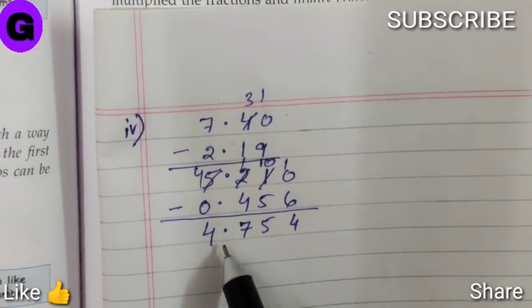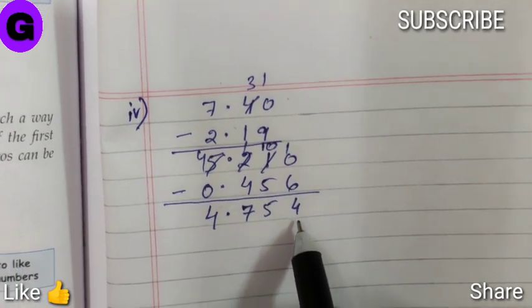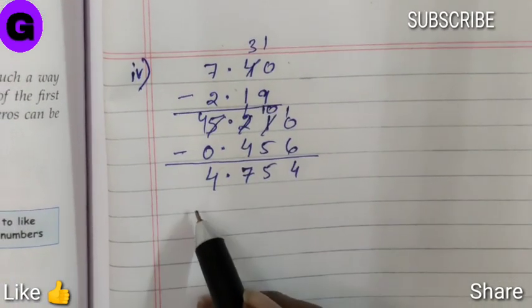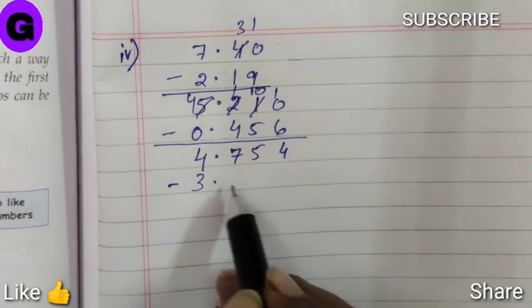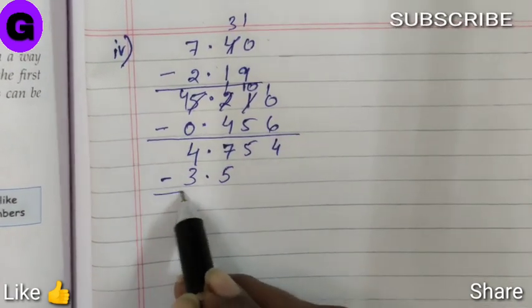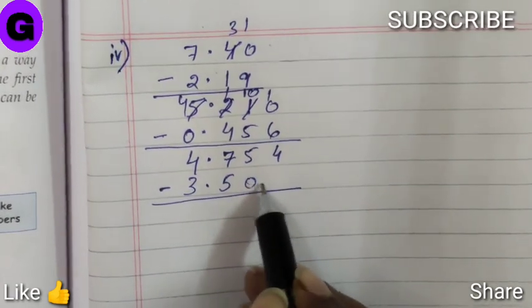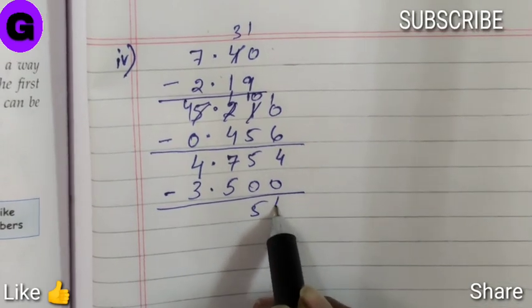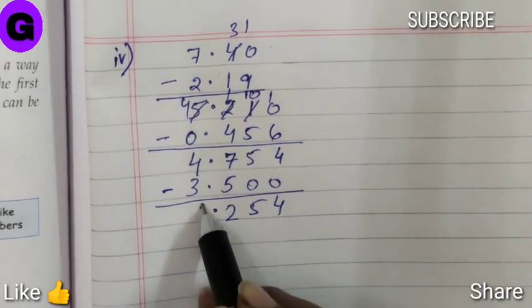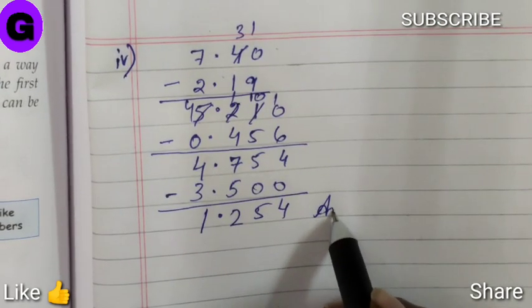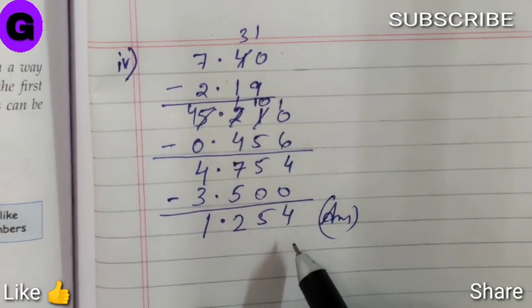We got the answer 4.754. Now from this answer we will subtract 3.5. So the answer is 1.254.